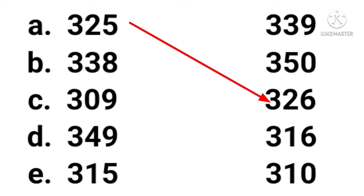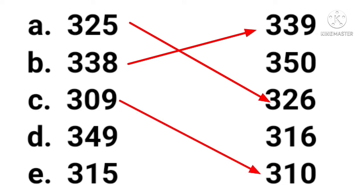Next one — three hundred and thirty-eight. What comes after three hundred and forty-nine? After three hundred and nine? It is three hundred and ten. Three one zero.